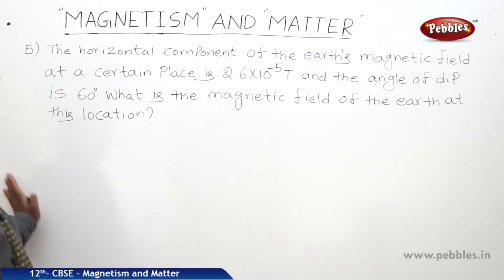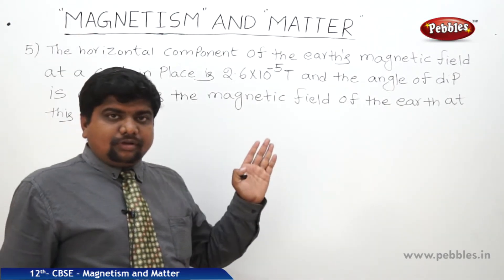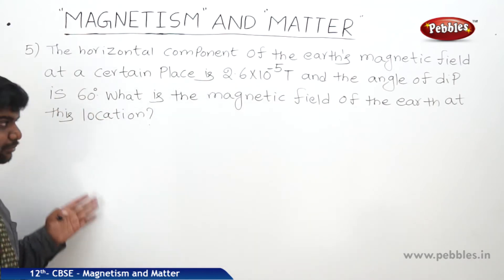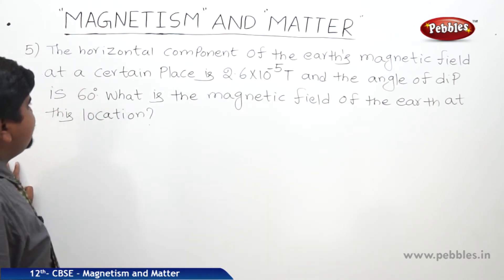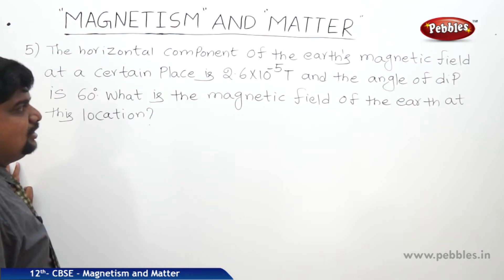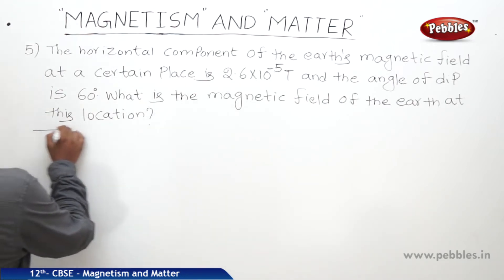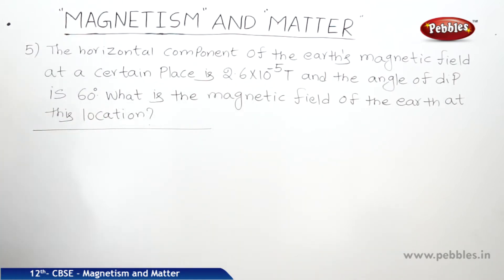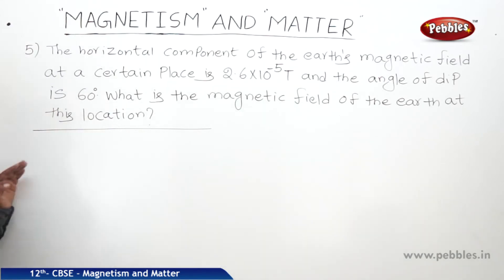This problem relates the horizontal and vertical components of the Earth's magnetic field. The horizontal component of the Earth's magnetic field at a certain place is 2.6×10⁻⁵ tesla and the angle of dip is 60 degrees. What is the magnetic field of the Earth at this location?